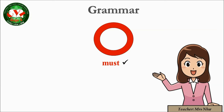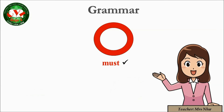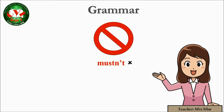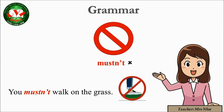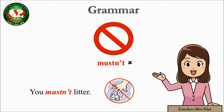First is 'must.' We use 'must' when we want to say someone has to do something. For example: 'You must wash your hands' — bạn phải rửa tay. 'You must do your homework' — bạn phải làm bài tập về nhà. In contrast, 'mustn't' means 'không được' — we use it when we want to tell someone not to do something. For example: 'You mustn't walk on the grass' and 'You mustn't litter.'